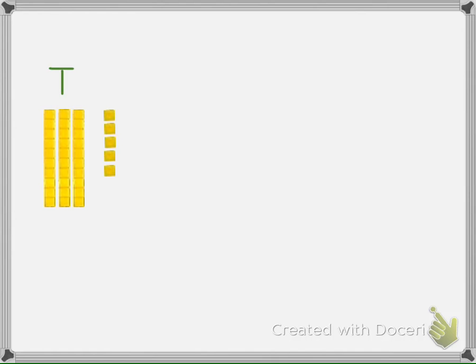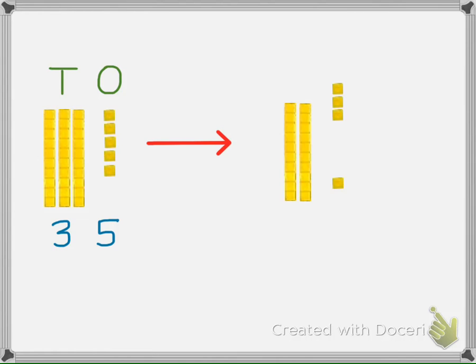If we have three tens and five ones, we can use the pattern of 10 to show different ways to make 35. Break up one 10 into 10 ones. Now 35 is built using two tens and 15 ones.